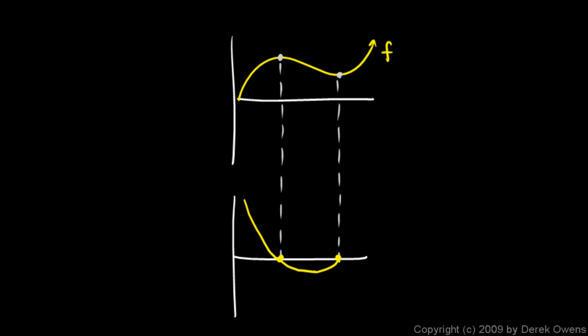And this point right here where my original function is the steepest in the negative direction, that corresponds to this point right here where my derivative function is the most negative. And then as we go on to the right here, you can see the slope here is 0 and then it gets steeper and steeper. So my derivative function starts off with a value of 0 right there and then gets larger and larger.